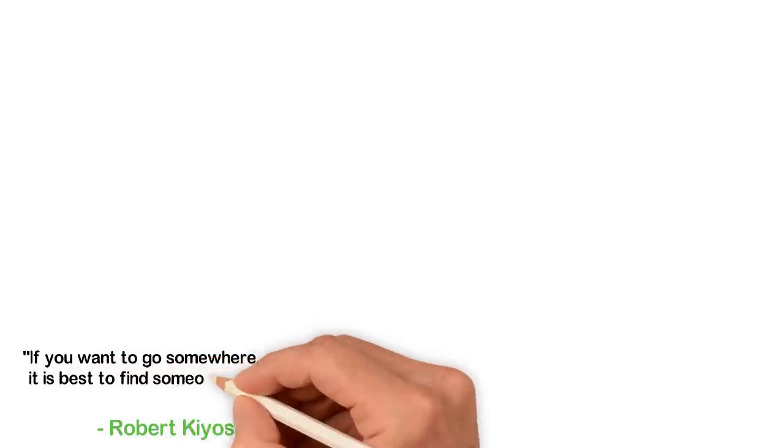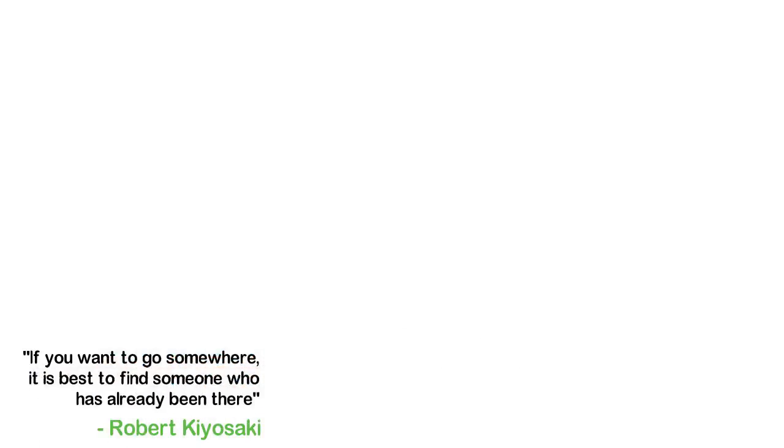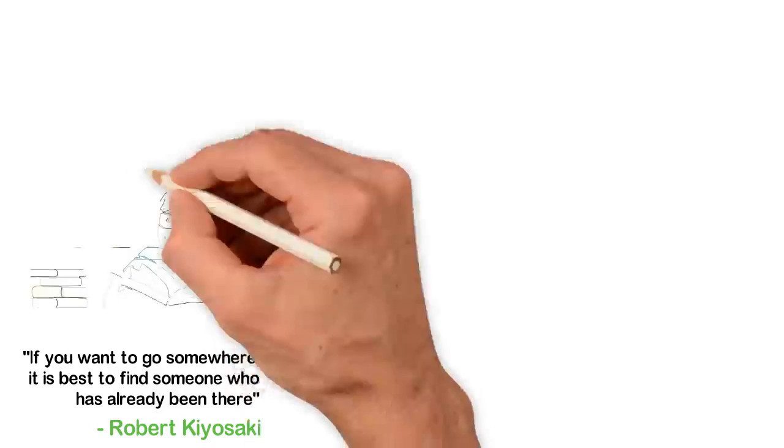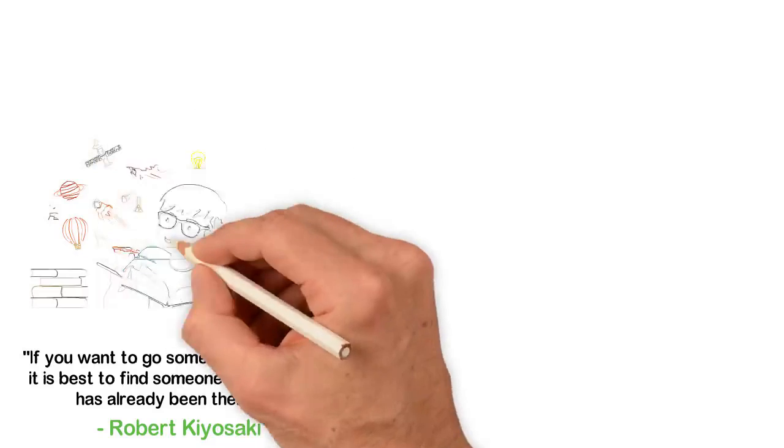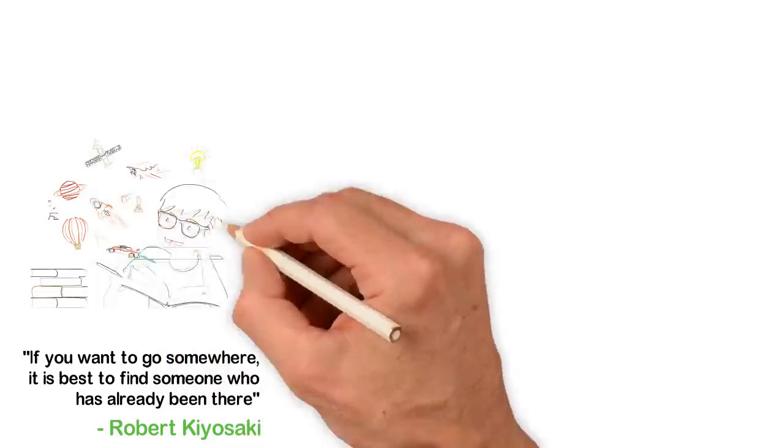Here's the thing: Robert Kiyosaki said, if you want to go somewhere, it is best to find someone who has already been there. If you want to achieve something, it's best to first sit down and make a list of people who have achieved that particular thing and make them your teachers.